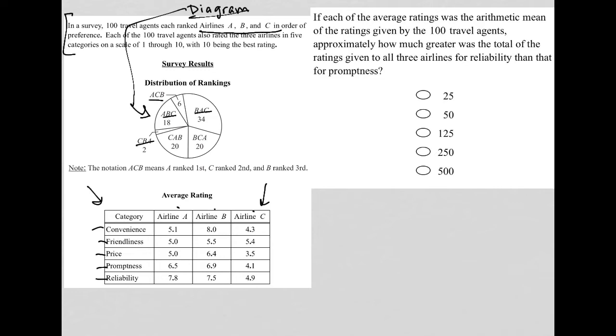So that tells us that for promptness, for instance, for airline A, 6.5 is the average. But 6.5 comes from finding the arithmetic mean.